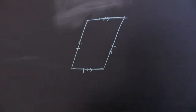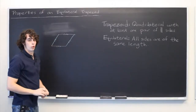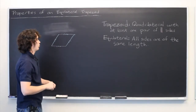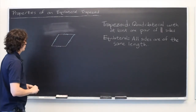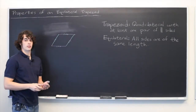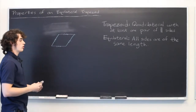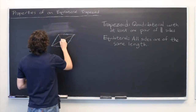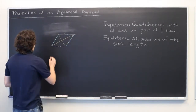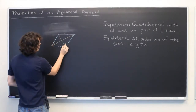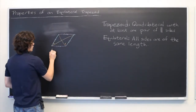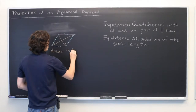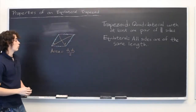And as a direct consequence of this, both pairs of opposite sides will be parallel. So what are some of the interesting properties of an equilateral trapezoid? While there may be several different ways of calculating the area depending on how much information you have, the most interesting one is if you have knowledge of the length of the diagonals — we'll call these d1 and d2. The area of the entire trapezoid is simply equal to d1 times d2 over 2, which is a very handy formula.